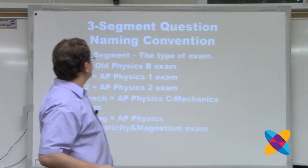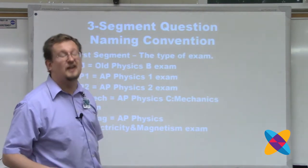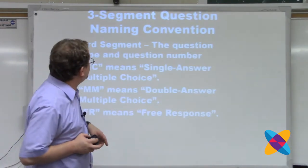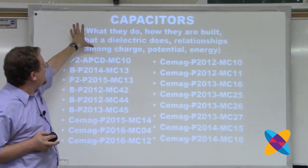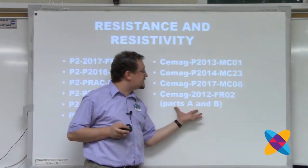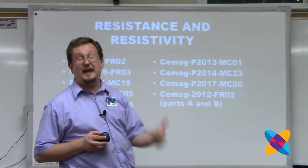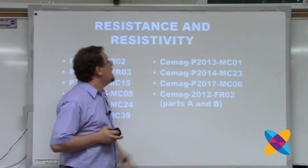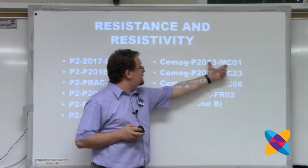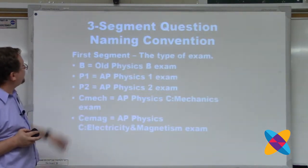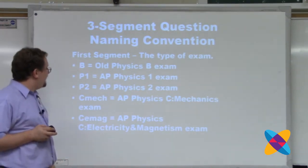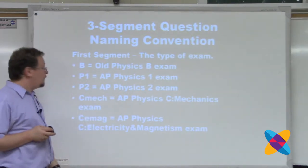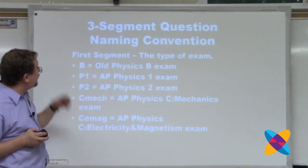Now, topics that show up a lot on the exam. If you've already seen the three-segment naming convention in another module, feel free to skip ahead. Each topic will have example questions shown with a three-segment identifier separated by dashes. The first segment is the type of exam the question came from: Physics B (B), Physics 1 or 2 (P1 or P2), or C Electricity and Magnetism. The second segment is the exam year.